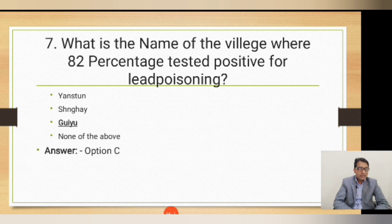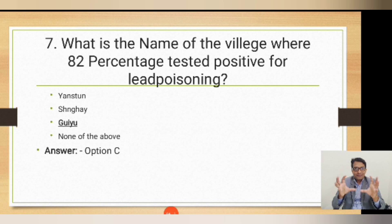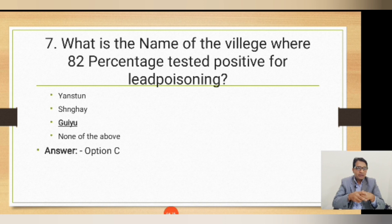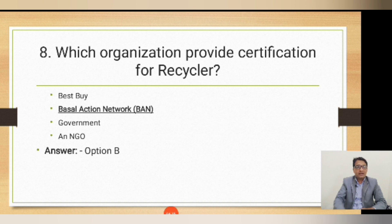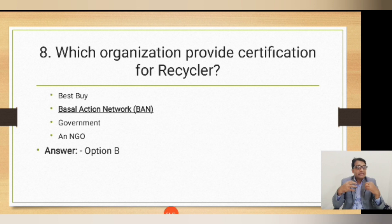Question number seven: what is the name of the village where 82 percent tested positive for lead poisoning? In the textbook we learned that there is a village in China where 82 percent of children, when born, tested positive for lead poisoning, and almost seven out of ten had some kind of disease due to electronic waste. Option C is correct.